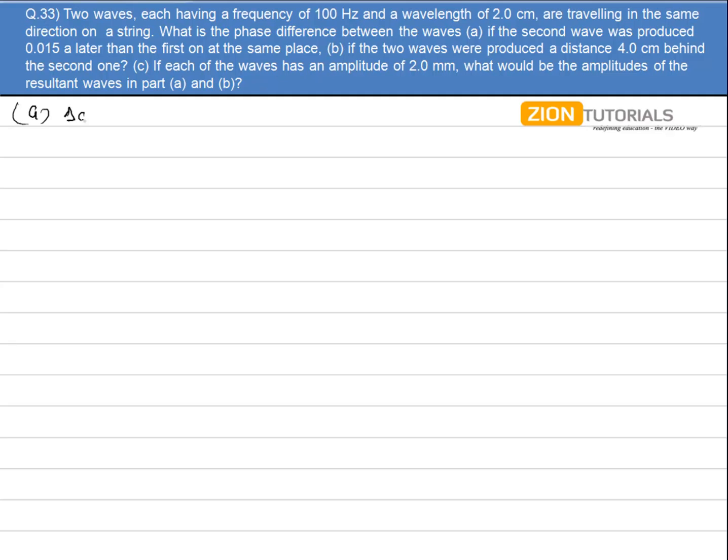We know that the phase difference is given by 2π by time period into time change. Just substitute the value: 2π by time period. I know the frequency, so time period will be 0.01 because frequency is 100 Hz, so time period will be 1 by ν, that is 0.01. So it is 0.01 into 0.015, so it comes out to be 3π.